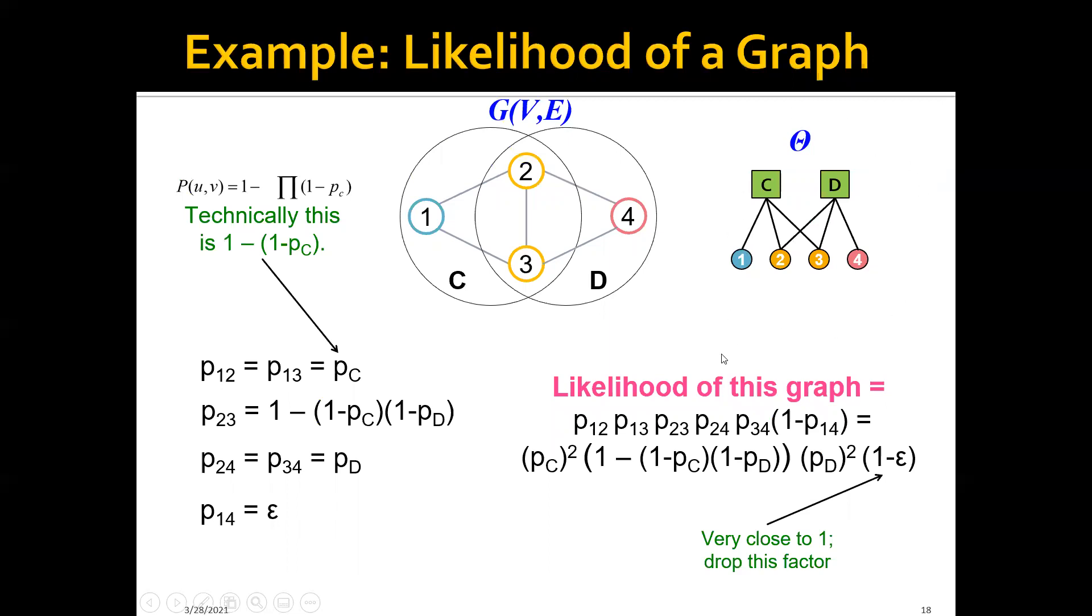Which basically says that node 1, 2, 3 belongs to community C, and node 2, 3, 4 belongs to community D. So we can see that correspondingly this is community C and this is community D.